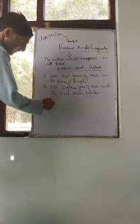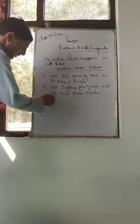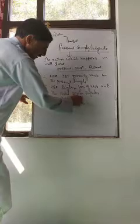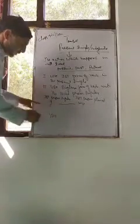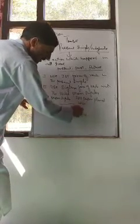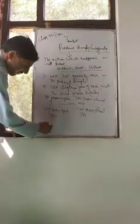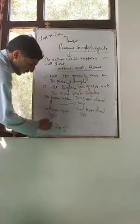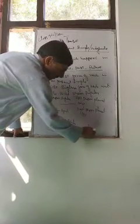Now, the first person singular is 'I'. The first person plural is 'we'. The second person singular is 'you', and 'you' is also the second person plural. The third person singular is 'he', 'she', 'it', and the third person plural is 'they'.